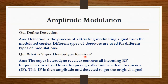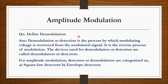The next question is: what is a superheterodyne receiver? The superheterodyne receiver converts all incoming RF frequencies to a fixed lower frequency called the intermediate frequency (IF), and this IF is then amplified and detected to get the original signal.